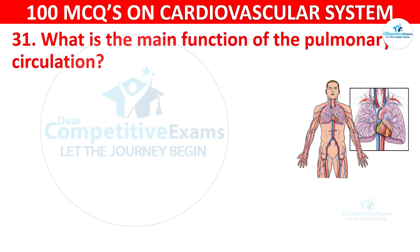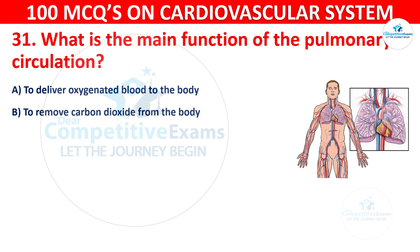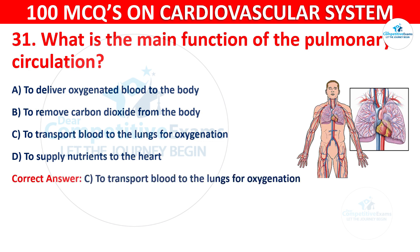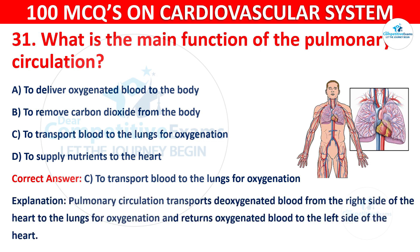Question 31: What is the main function of the pulmonary circulation? Options are: To deliver oxygenated blood to the body, To remove carbon dioxide from the body, To transport blood to the lungs for oxygenation, or To supply nutrients to the heart. The correct answer is C, To transport blood to the lungs for oxygenation. The pulmonary circulation transports deoxygenated blood from the right side of the heart to the lungs for oxygenation and returns oxygenated blood to the left side of the heart.